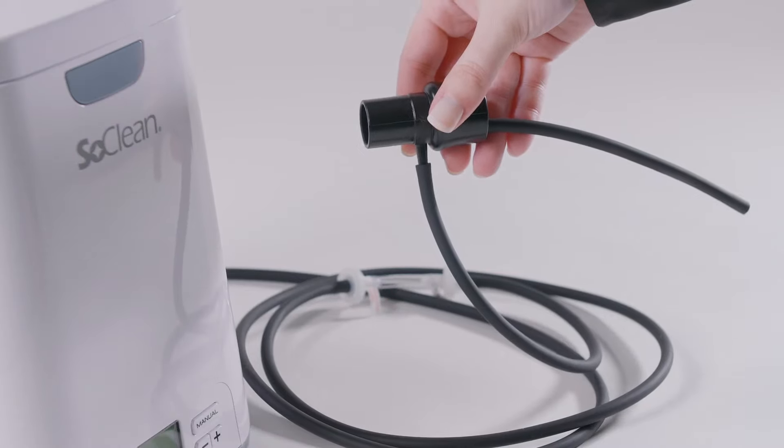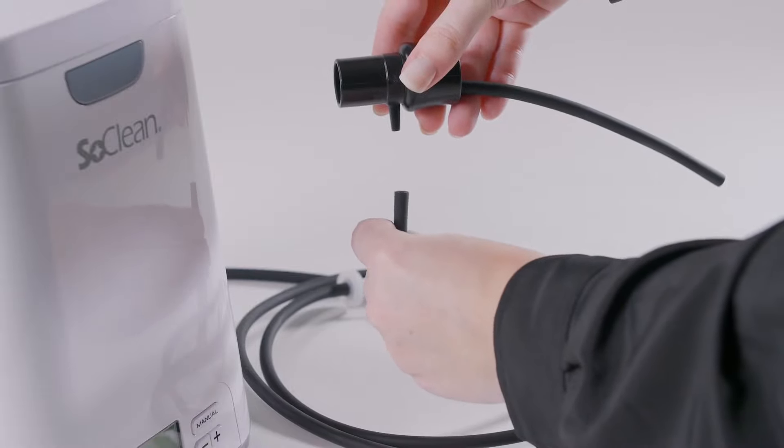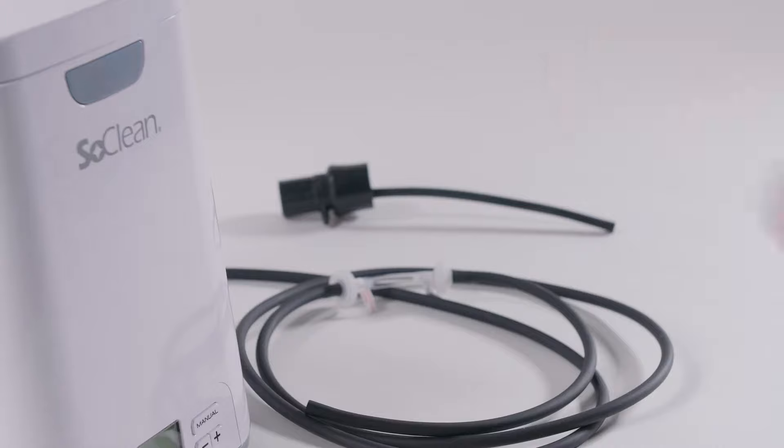Detach the injection fitting and short hose from the main SoClean hose. You will no longer need the injection fitting and short hose. Save these parts in case you need them in the future.